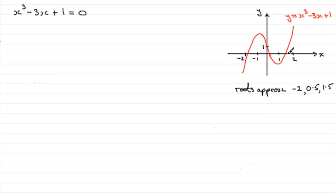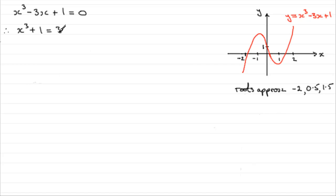Well, one way is by a method called iteration, which I'll show you how to do. What we do is we take our equation and we make one of the x's in the equation the subject. There are various ways of doing this, as I'll show you throughout this tutorial. Let's suppose we make this x here the subject. I start by adding 3x to both sides, so we end up with x cubed plus 1 equals 3x. And if I reverse this and divide both sides by 3, I get x equals one third of x cubed plus 1.